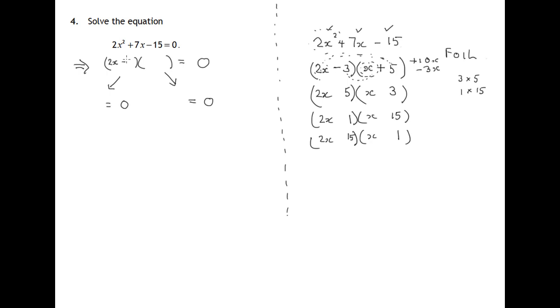It's 2x minus 3, that's the first factor, and x plus 5, which is the second factor. Now I'm looking down this list. You might well have proceeded with this one first.